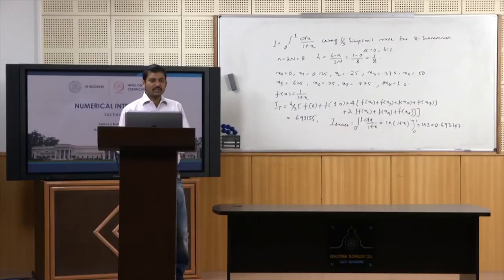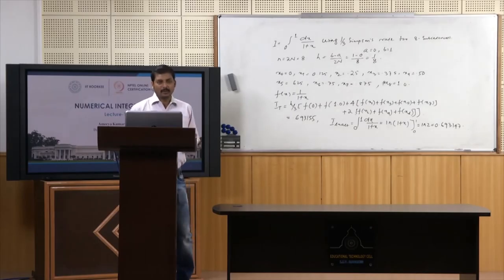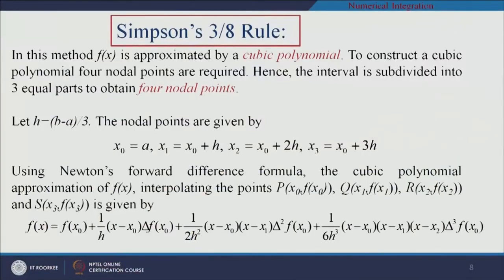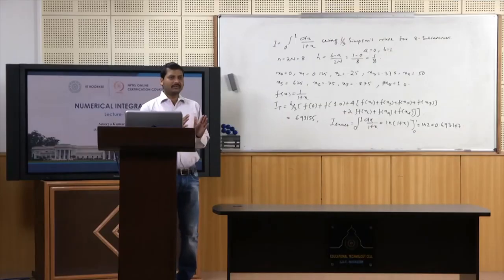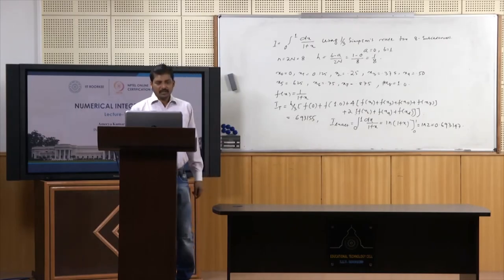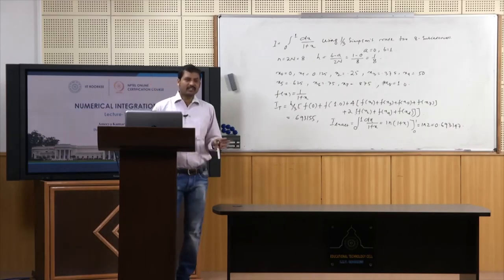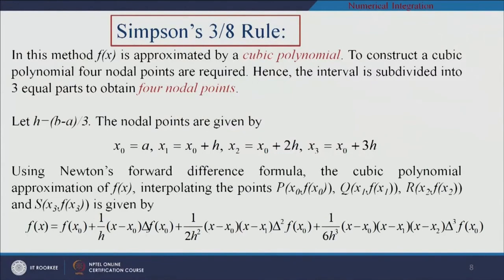Next we go to Simpson's 3/8 rule. In this method, f is approximated by a cubic polynomial. For the trapezoidal rule f was approximated by a linear polynomial, for Simpson's 1/3 rule by a quadratic polynomial, and for Simpson's 3/8 rule f is approximated by a cubic polynomial. To construct this cubic polynomial, 4 nodal points x0, x1, x2, x3 are required, so the interval is subdivided into 3 equal parts.